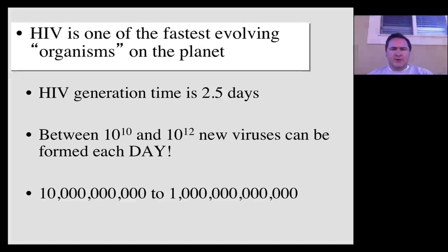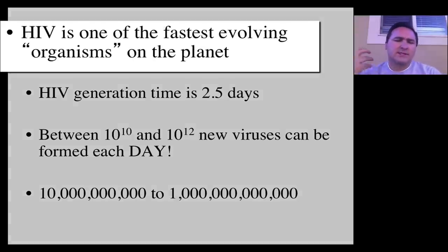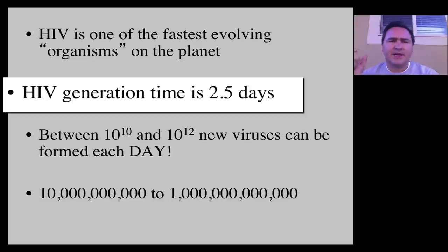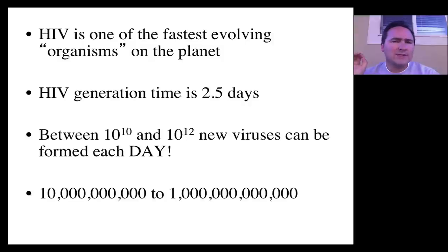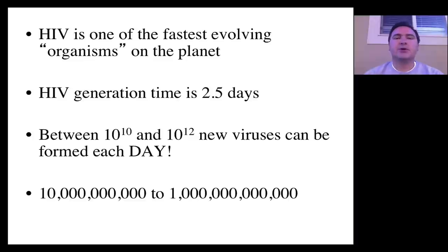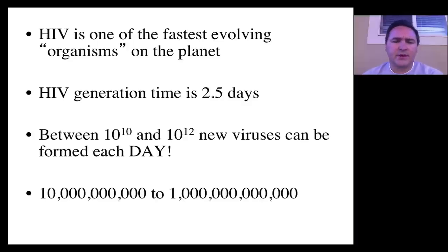As I said, HIV is one of the fastest-evolving organisms. Once it gets inside the blood and starts to infect a white blood cell, it only takes about two and a half days for it to begin reproducing more viruses. But once it begins to do that and a host has a bunch of their white blood cells infected, the virus can produce 10 to the 10th or 10 to the 12th new viruses every day. And remember that 20% of those viruses are new with different mutations occurring.